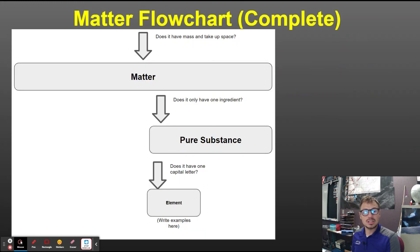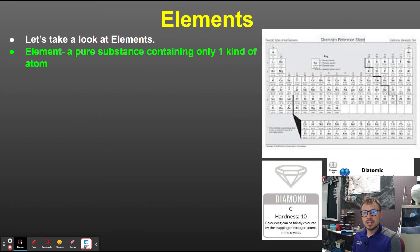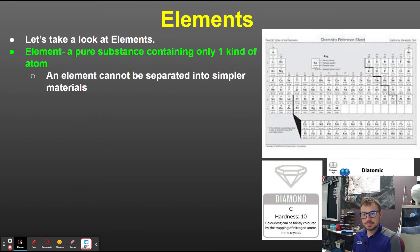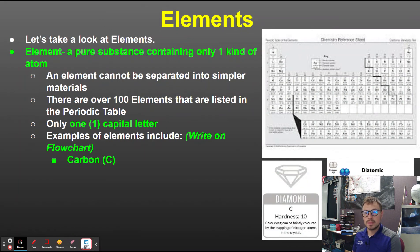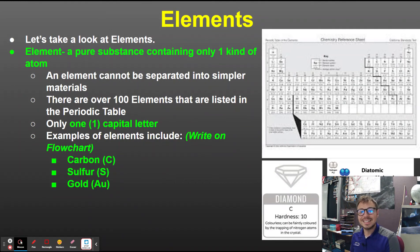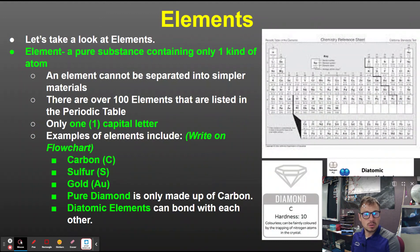If we're looking at a pure substance, we can ask more questions: does it have one capital letter? If so, it's an element. An element is a pure substance containing only one kind of atom — it cannot be separated into simpler materials. There are over a hundred elements listed in the periodic table. Examples include carbon (capital C), sulfur (capital S), and gold — which has two letters but only one capital. Pure diamond is also an element because it's only made up of carbon.